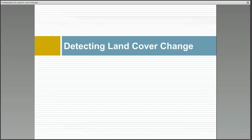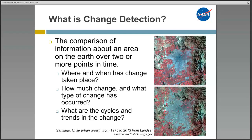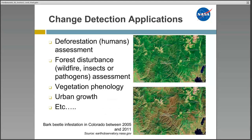Next I will be discussing how to detect land cover change with satellite imagery. Detecting change of the Earth's surface features is extremely important for understanding relationships and interactions between human and natural phenomena. The questions that can be answered using remote sensing include: where and when has change taken place; what is the quantity of the change and what is the nature of the change; and what are the cycles and trends of the change over time? These images show the growth of Santiago, Chile between 1975 and 2013 from the Landsat sensor. Other applications of change detection include bark beetle infestation in Colorado between 2005 and 2011 — in 2005 there was little infestation, but in 2011 the brown areas indicate trees that had been killed due to beetle infestation.